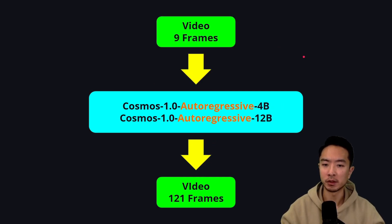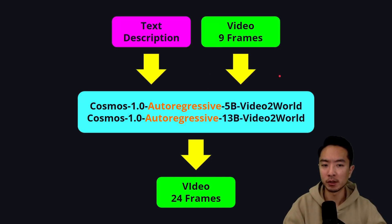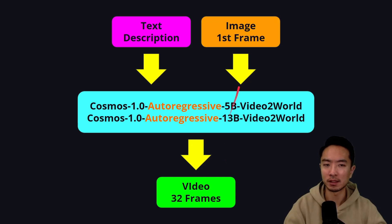The Cosmos 1.0 Autoregressive 4B and 12B models take video frames as input — 9 frames — and output 121 frames of video. There's also an option for those models to take the image of the first frame as input and output 32 frames. The 5B and 13B Video-to-World autoregressive models take two inputs — text description and 9 frames of video — and output 24 frames of video. An alternative is to use the image of the first frame instead, with the same output.